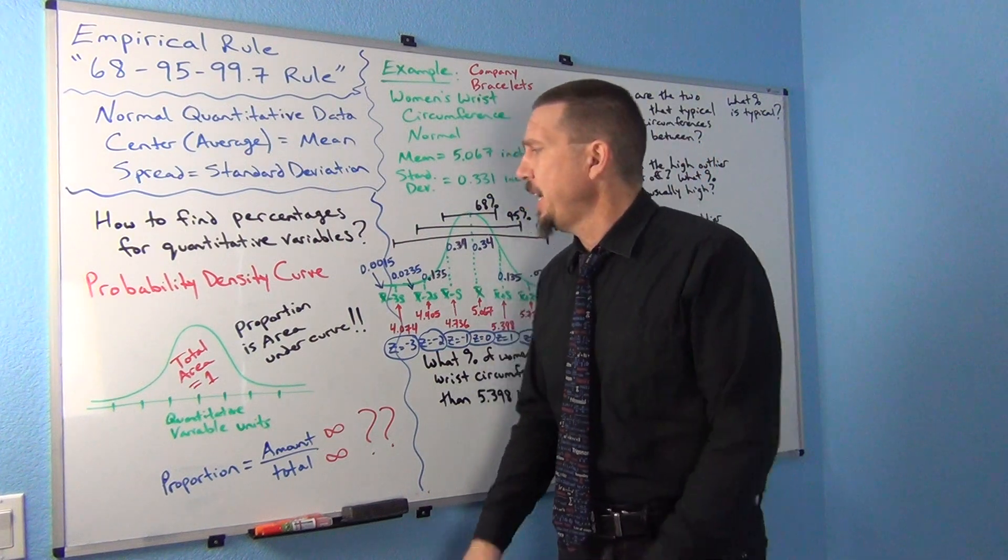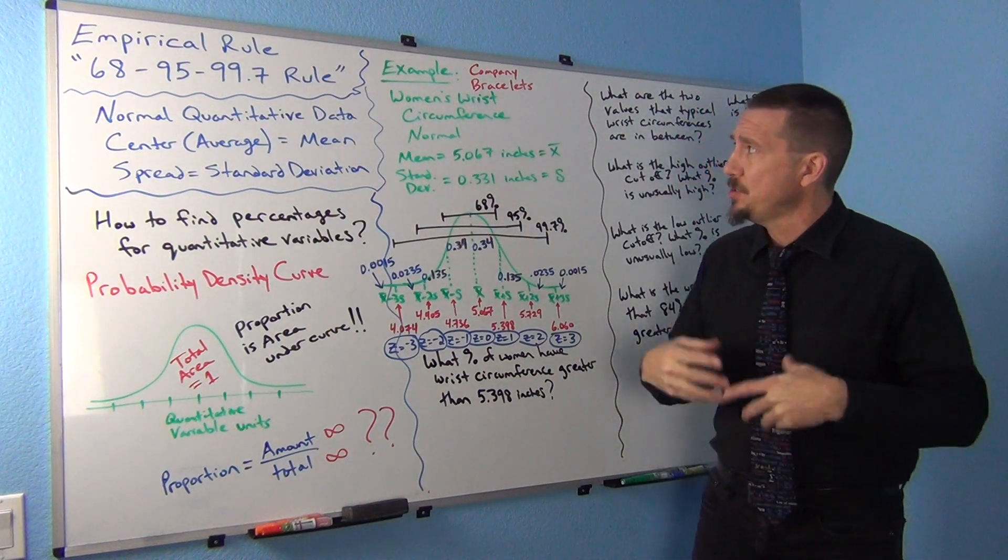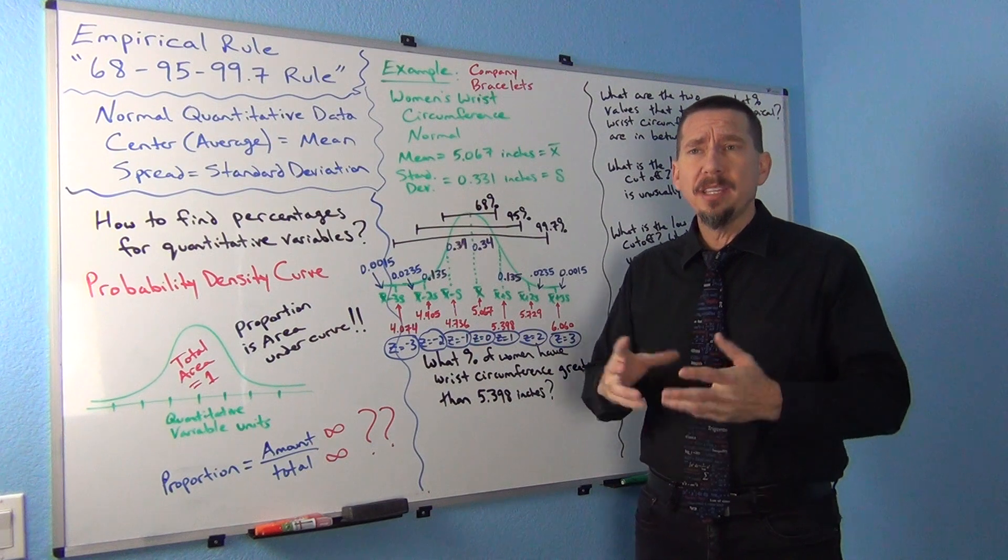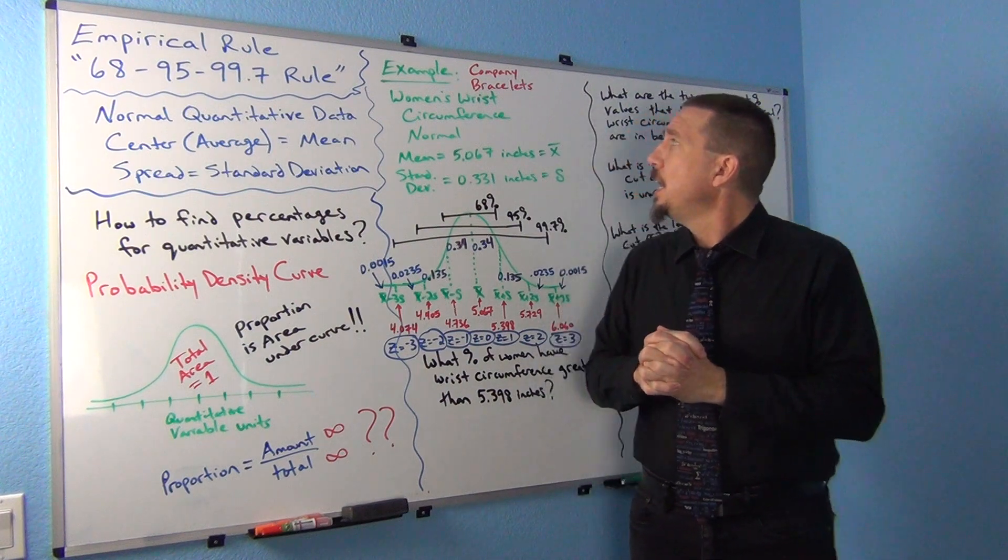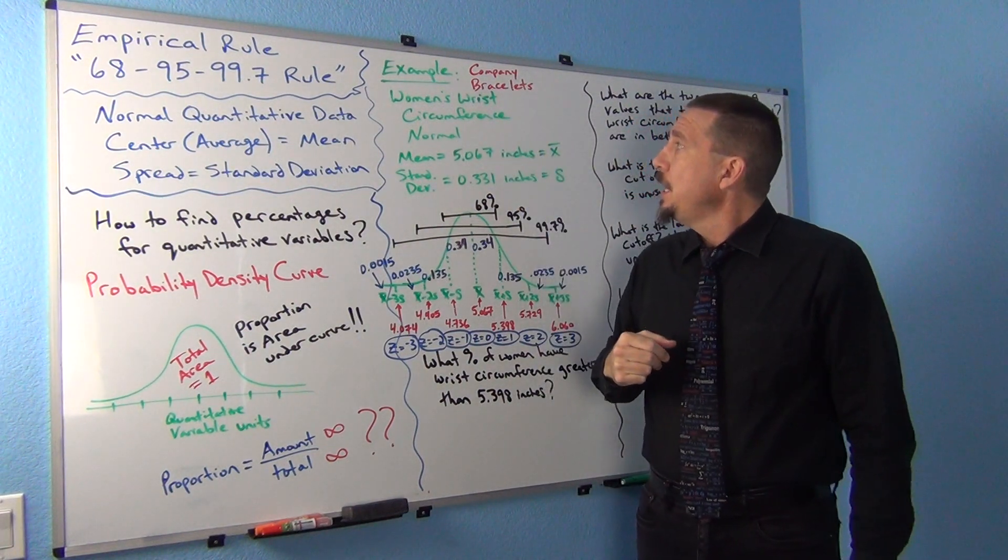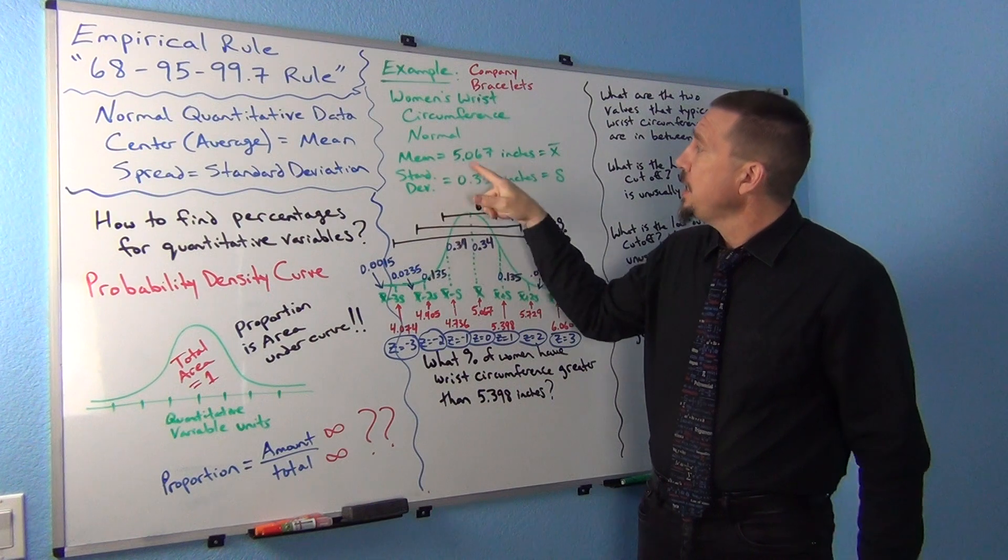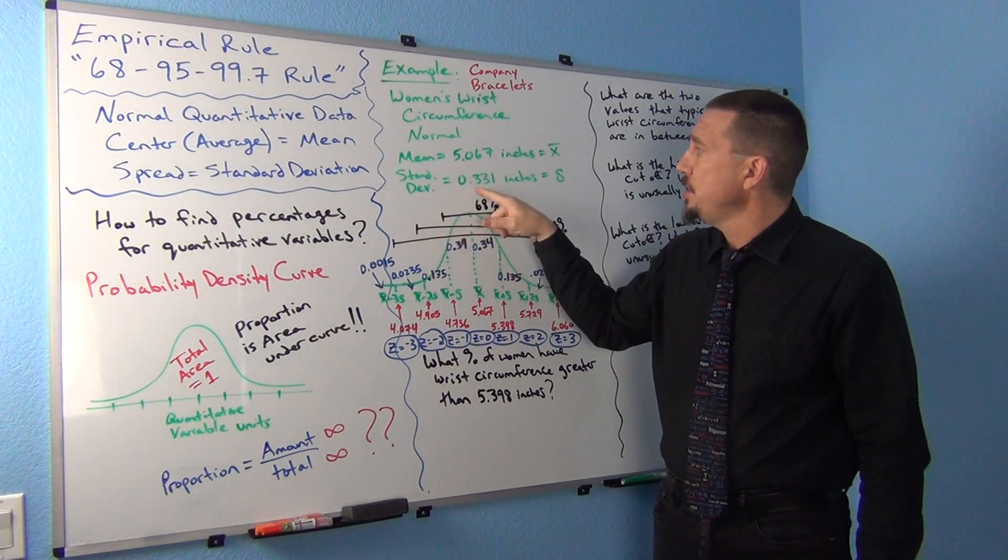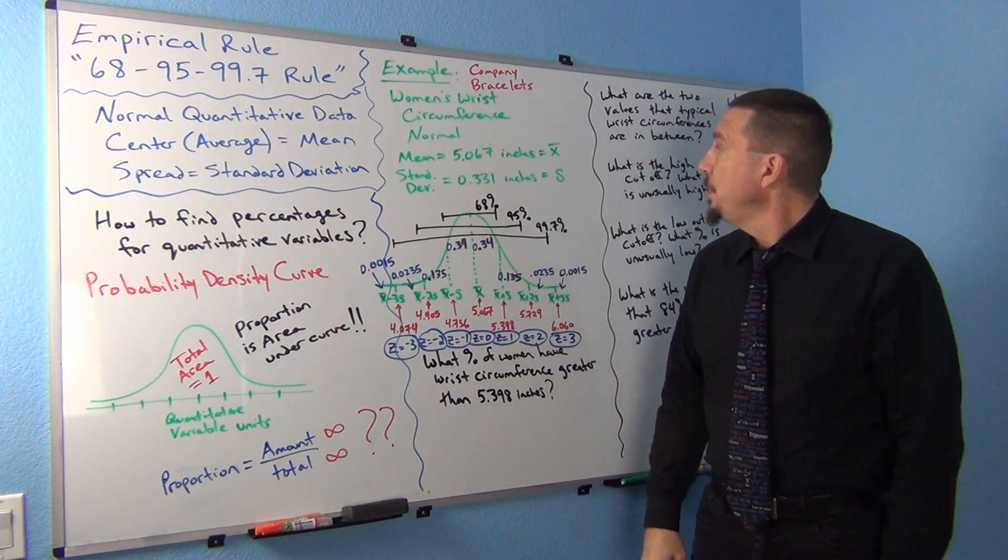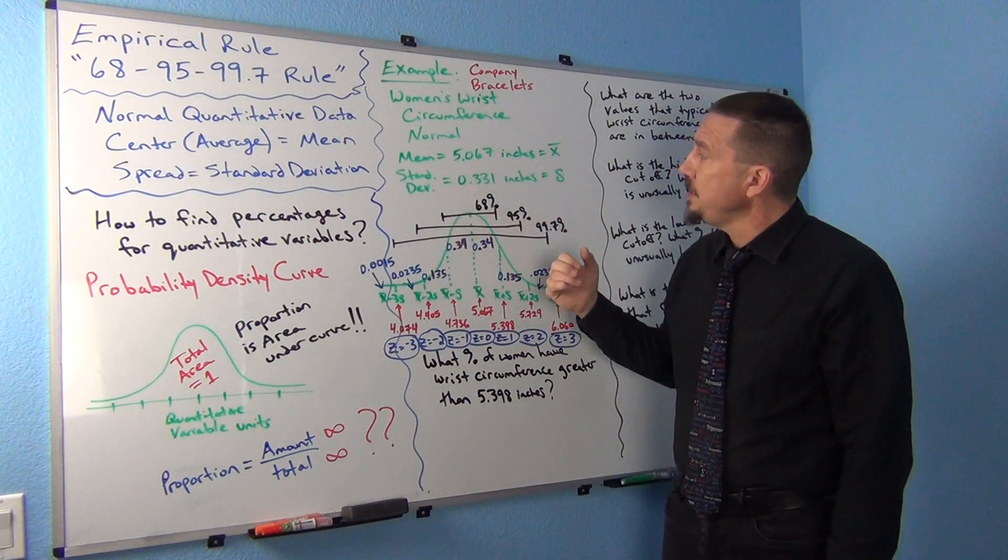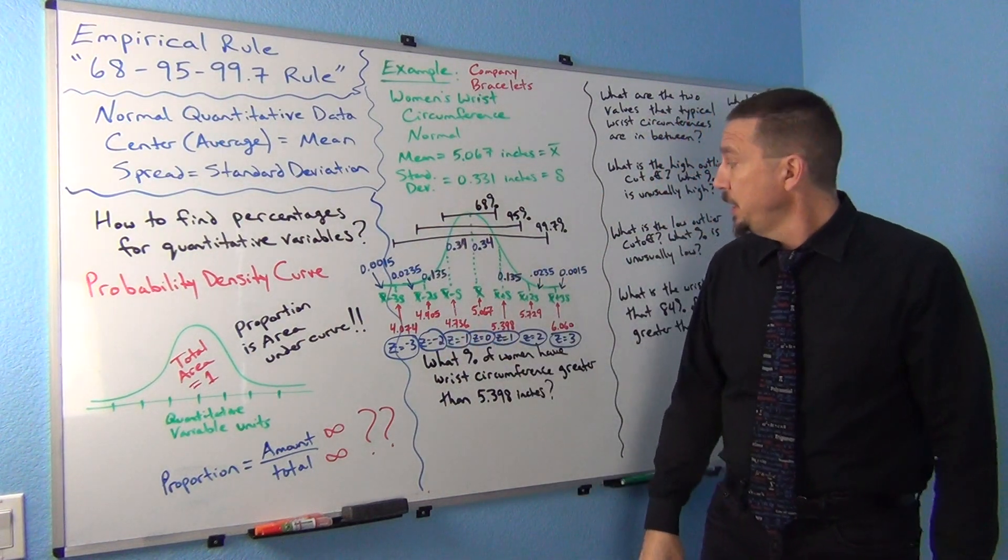So let's look at an example and we can kind of work through this a little bit. So let's suppose we have a company that sells bracelets and they're interested in what are the sizes of women's wrists. So we looked at some women's wrists circumference and we're going to assume that they came out normal. In fact, we looked at some of this data. This is one of the ones we looked at in a previous video. And the mean came out to 5.067 inches and the standard deviation was 0.331 inches. Now I'm going to assume that this was applying to all women. And if that was the case, then what kind of percentages could we calculate?